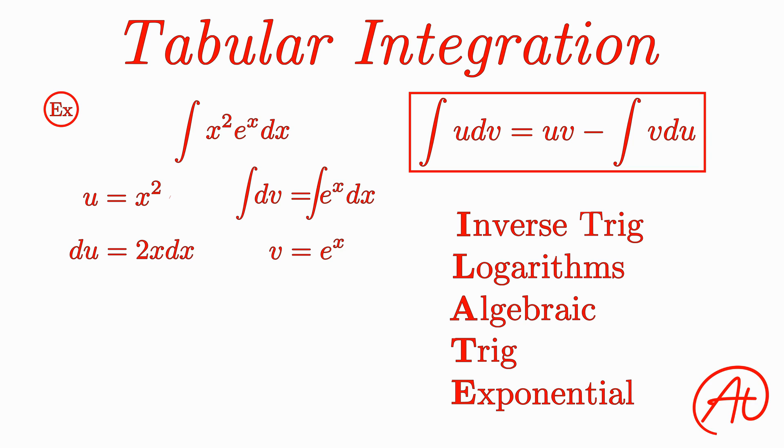Now we can plug all this info into our formula to get that the integral of x squared times e to the x equals x squared times e to the x minus the integral of 2x times e to the x. Uh-oh. Unlike our previous examples, this new integral isn't directly solvable either. However, we are a little closer and can solve it by another round of integration by parts.